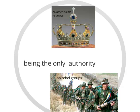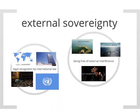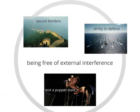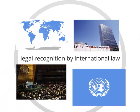Internal sovereignty also means there are no other claims to power within the state — no competing rulers claiming territory, and no rebel groups. Here we see a picture of the FARC, a very infamous rebel group in Colombia that claims pieces of Colombian territory as their own. The next kind is external sovereignty, which refers to being free from external interference — your borders are secure, you can defend yourself, your government makes the state's laws rather than being a puppet state, and you are legally recognized by international law so you can participate in the United Nations or go to international court.